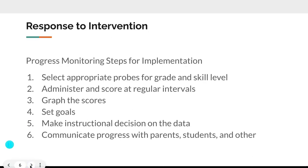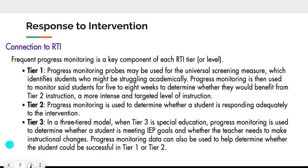When monitoring for implementation, always select an appropriate probe for the grade or skill level — sometimes the school tells you which probe to use, other times you decide. Administer and score the probe at regular intervals, then graph the scores and work with students to set goals. Make instructional decisions based on the data, and communicate progress with students, parents, and other professionals in the school.